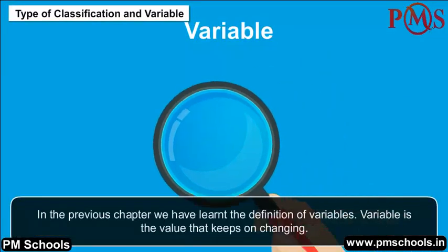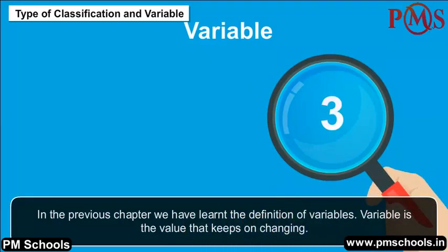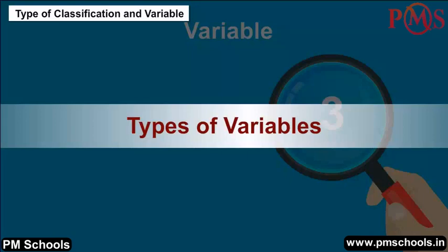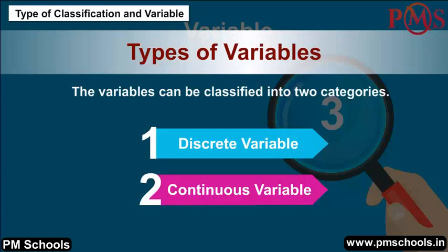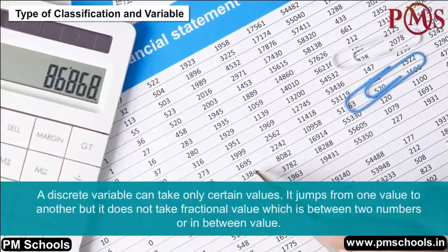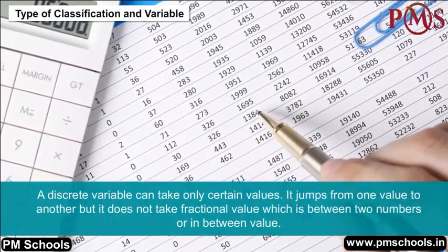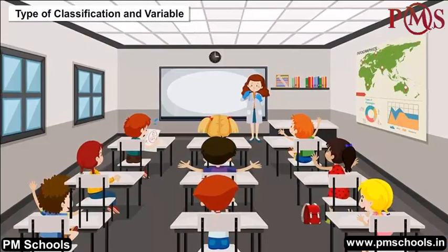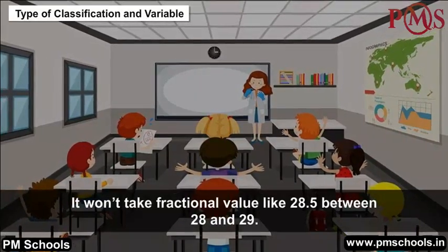Variables: In the previous chapter, we learned the definition of variables — a variable is a value that keeps on changing. Variables vary on the basis of different criteria. Types of variables: Variables can be classified into two categories — discrete variable and continuous variable. A discrete variable can take only certain values; it jumps from one value to another but does not take fractional values between two numbers. For example, the number of students in a class will assume whole number values and won't take a fractional value like 28.5 between 28 and 29.